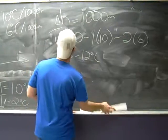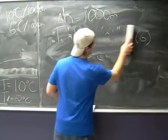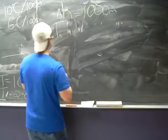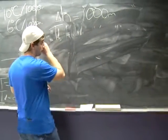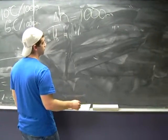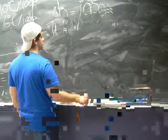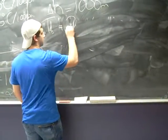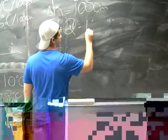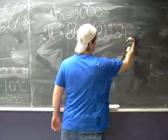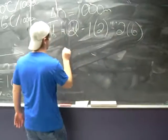Now we must calculate the dew point temperature at the top of the mountain. We calculate this the same way as the surface temperature, except instead of using 10 degrees per 1,000 meters as our dry adiabatic lapse rate, we use 2 degrees per 1,000 meters. We can calculate our dew point temperature as 2 minus 1 times 2 minus 2 times 6, which gives us negative 12 degrees Celsius.